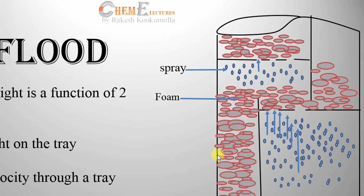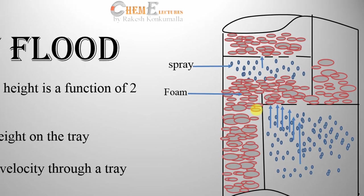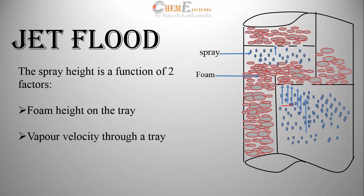Once the downcomer is filled with foam, further increase in vapor flow causes an increase in foam height on the tray deck, which increases spray height. High vapor velocity combined with high foam levels causes the spray height to hit the underside of the tray above, resulting in back mixing of liquid from the lower tray with the liquid on the upper tray. This back mixing of liquid reduces separation, thus reducing tray efficiency. When spray height from the tray below hits the tray above, this is called the incipient flood point or initiation of jet flooding.